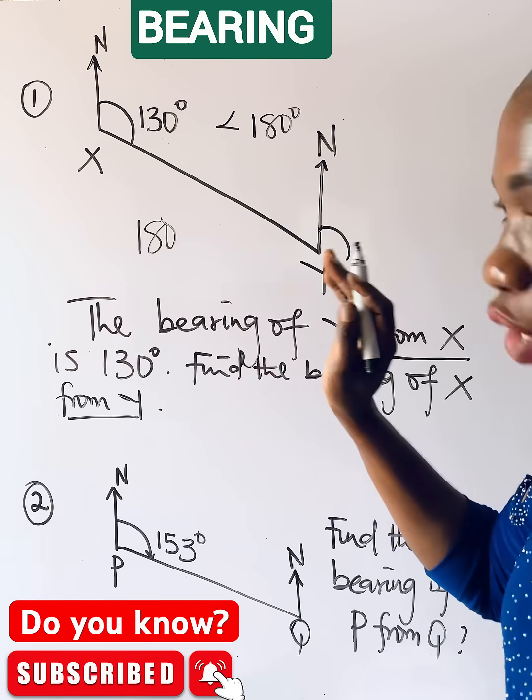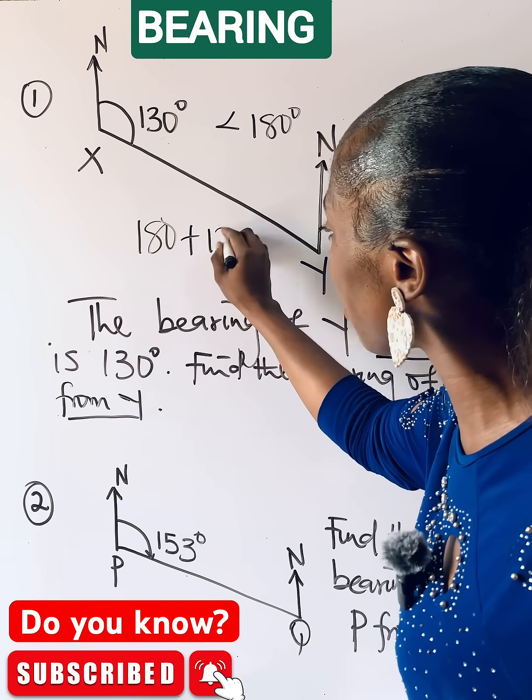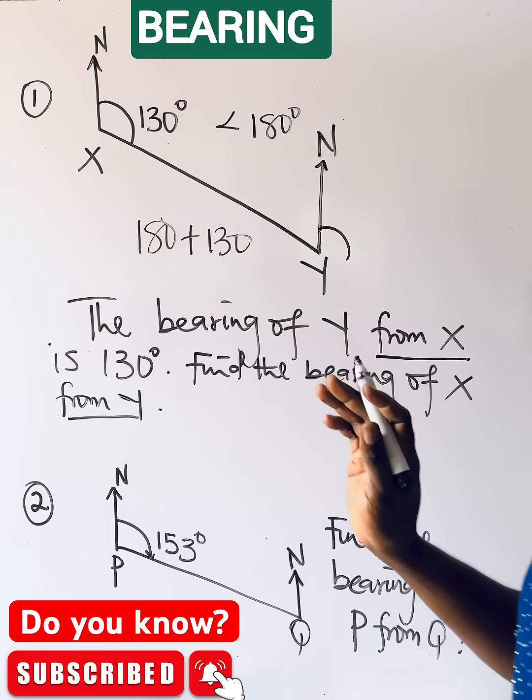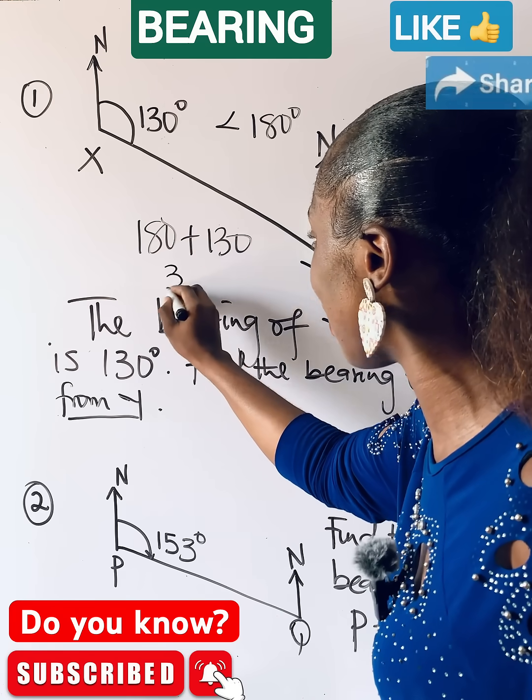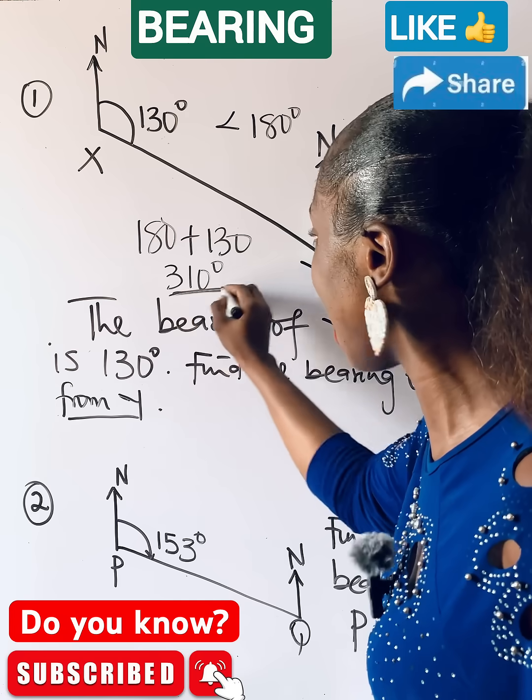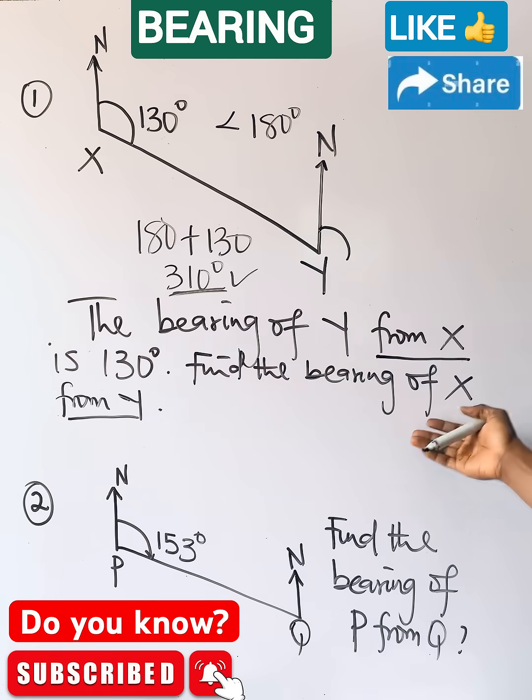So you are going to do 180 plus this one given, which is 130. And when you add these two, it gives you what? 310 degrees, and that becomes your answer.